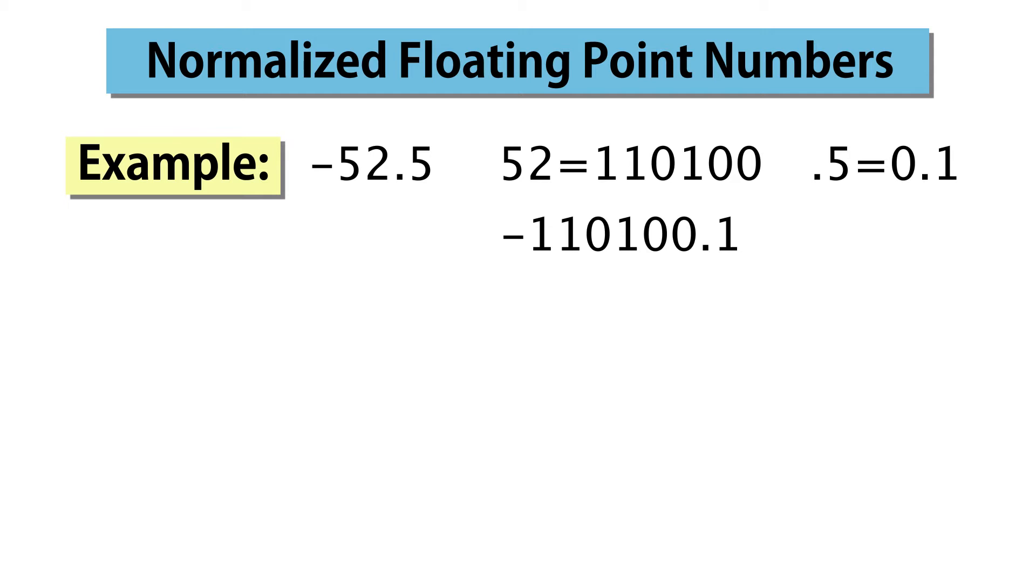This is the binary number we need to represent in floating point format. Floating point is really a version of scientific notation. This is the way that scientists represent very large or very small numbers.